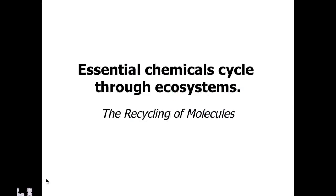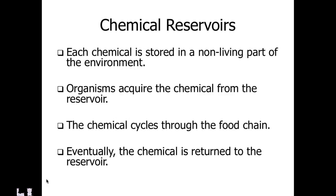We just looked at how energy is transmitted and passed along through an ecosystem and how there are some inefficiencies built into it. But energy isn't the only component that's going to flow through an ecosystem — various chemicals, many of which are essential for life, are also going to pass through. Because essential chemicals cannot be made by the body, they have to be consumed, so we're going to have a recycling of these molecules from both formerly living or now dead organisms as well as from the non-living components of the ecosystem.